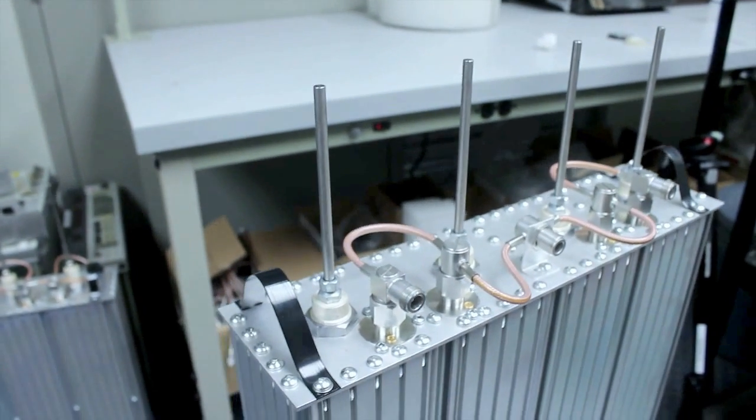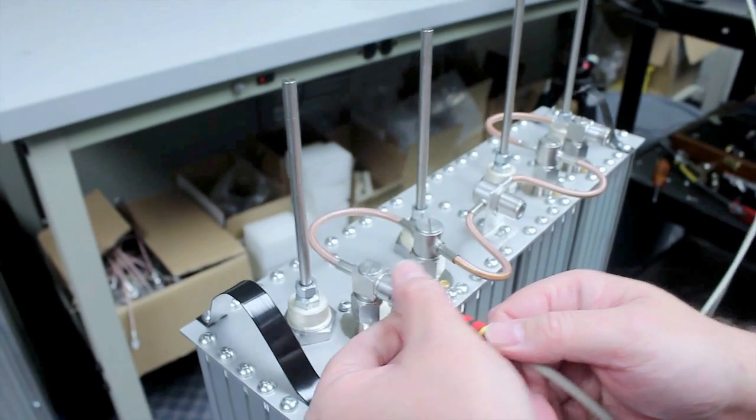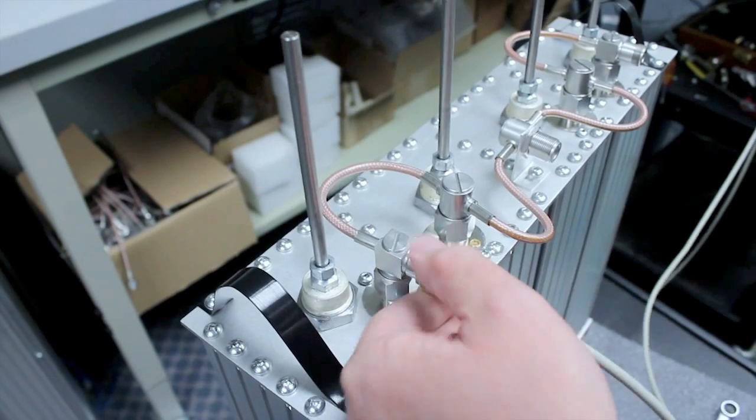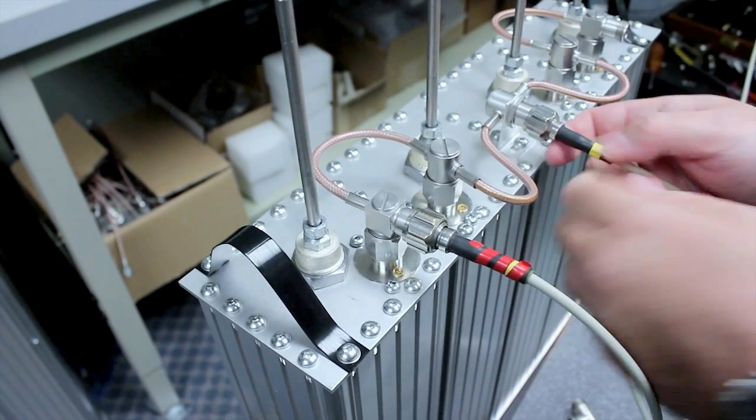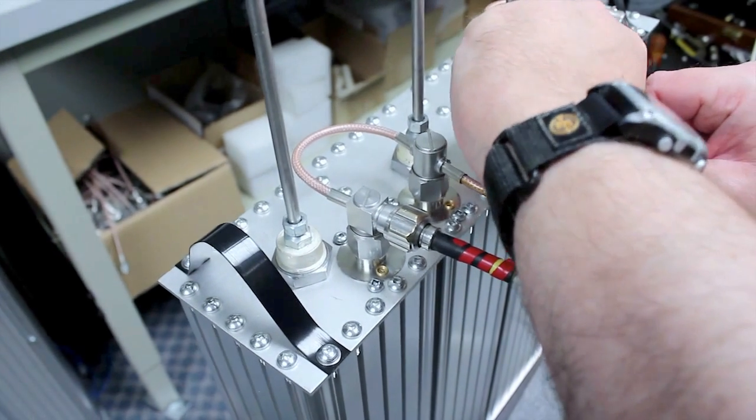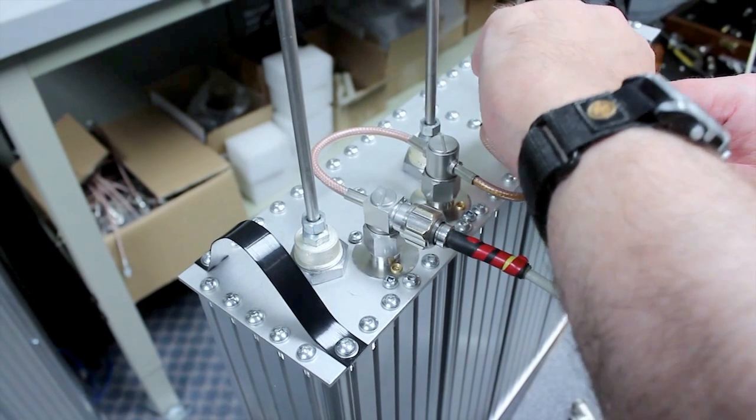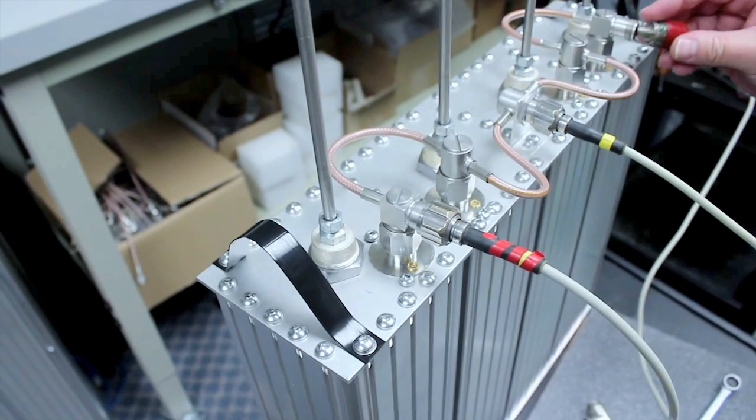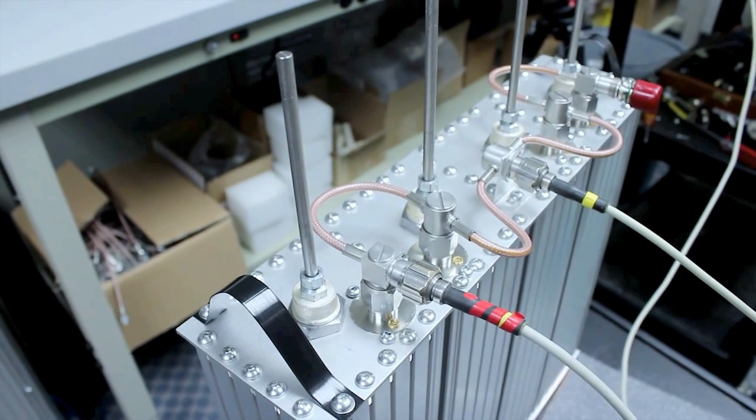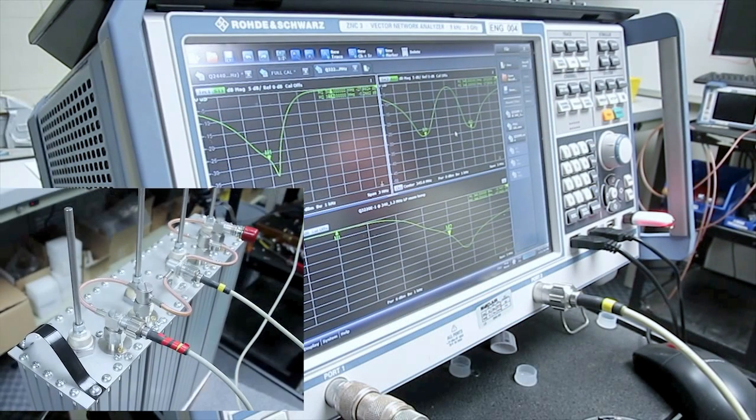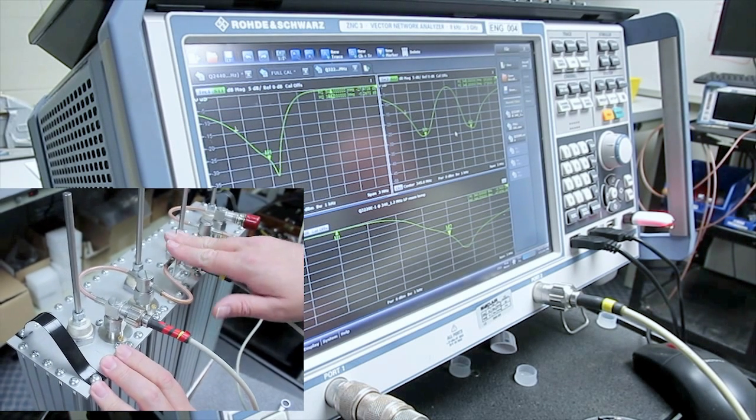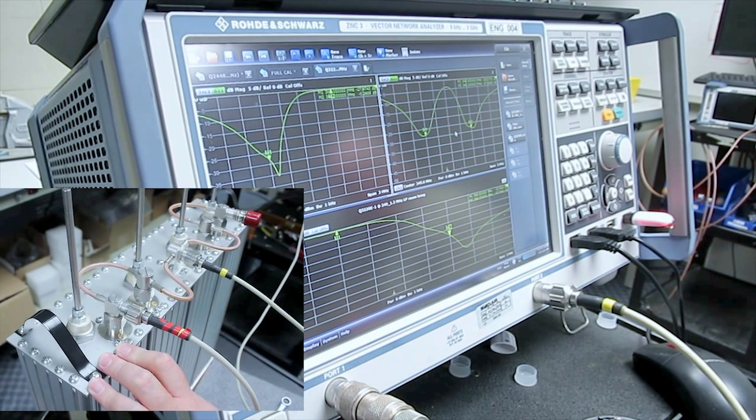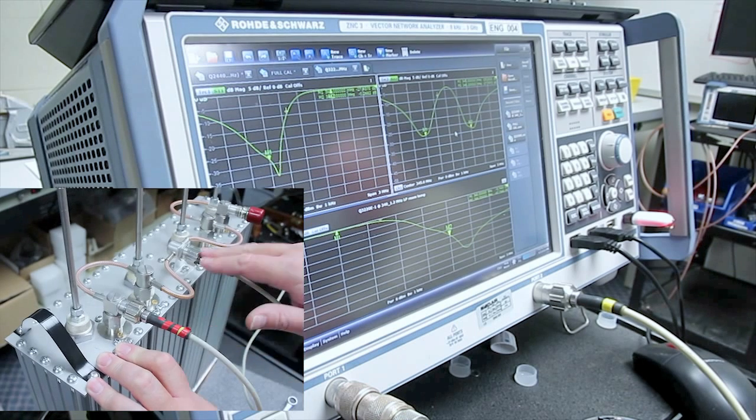So now we are going to tune the low pass section first. Attach your network analyzer cables to the low pass input and to the antenna port. And take your 50 ohm terminator, attach it to the high pass section. Now, on the analyzer, you can see in the upper left corner, that is the return loss at the input port. In the upper right corner, that is the return loss at the antenna. And again, the bottom curve is the insertion loss between the input at the low pass and the antenna port.